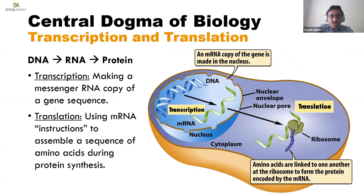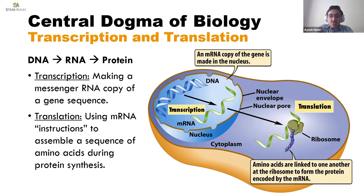Genes code for proteins — this is called the central dogma of biology. Transcription is the process of making an RNA copy of a gene sequence. This messenger RNA molecule leaves the nucleus and enters the cytoplasm, where it directs synthesis of the protein it encodes. Translation is the process of translating that mRNA sequence into a sequence of amino acids during protein synthesis. The genetic code is the blueprint of your proteins — it describes the relationship between the sequence of base pairs in a gene and the corresponding amino acid sequence. In the cell cytoplasm, the ribosome reads the mRNA in groups of three bases called codons to assemble the protein. Understanding transcription and translation is really important as we move into transcriptomics.